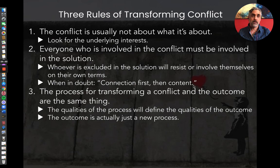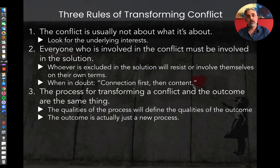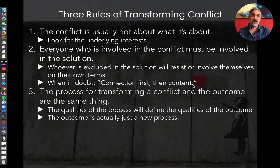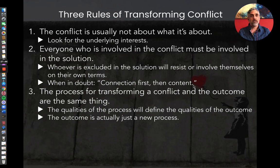The third rule for transforming conflict is: remember that the process for transforming a conflict and the outcome are actually the same thing. There really isn't much separation between the ends and the means. Whatever qualities you infuse in the process of trying to solve a conflict are actually going to define the quality of that outcome. So if you want an outcome that's inclusive and meets the interests of everyone, you're going to have to include everyone and talk about what those interests are. And remember that the outcome is just a new process — it's not like you're going to get to some fixed state and then it'll all be done.